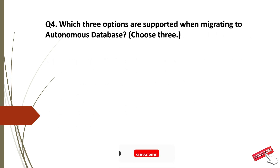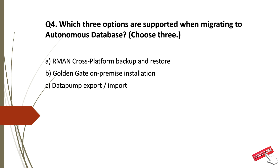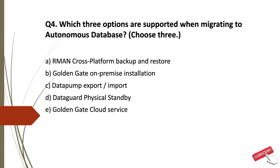Question 4: Which three options are supported when migrating to Autonomous Databases? Option A: RMAN Cross-Platform Backup and Restore. Option B: GoldenGate On-Premise Installation. Option C: Data Pump Export-Import. Option D: Data Guard Physical Standby. Option E: GoldenGate Cloud Service.